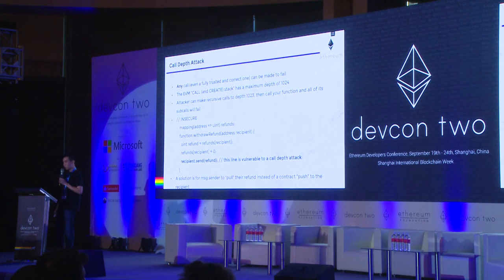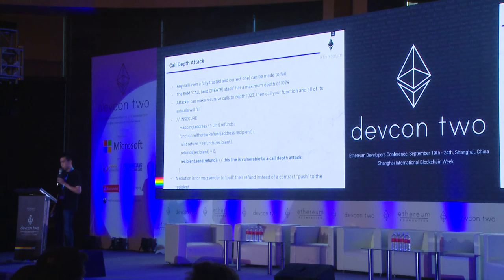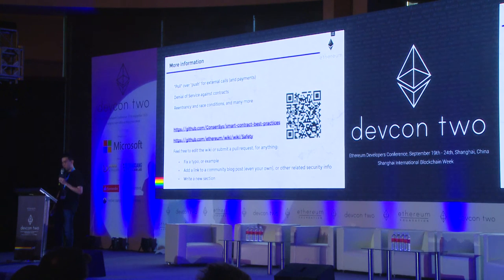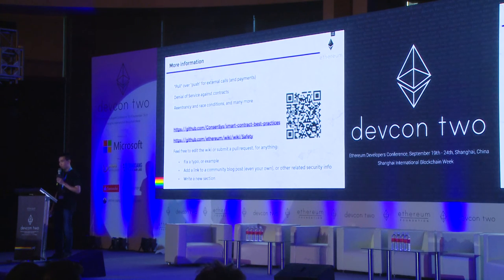As an improvement, the return value of send could be checked. However, a preferred solution is to write the contract so that message sender pulls their refund, as opposed to the insecure approach of pushing the refund to a recipient. There's plenty more information and examples — such as pull-over-push, denial of service against contracts, and re-entrancy — that can be found in the repo and wiki page.